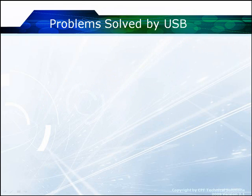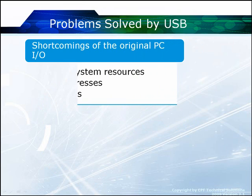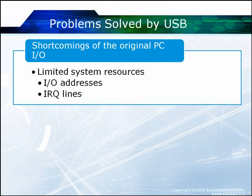One of the intents of USB was to solve some of the shortcomings of the original PC I/O. We basically ran out of IRQ lines and I/O addresses — those are limited resources. In USB, we share one set of resources amongst all the USB devices that are attached to the PC.